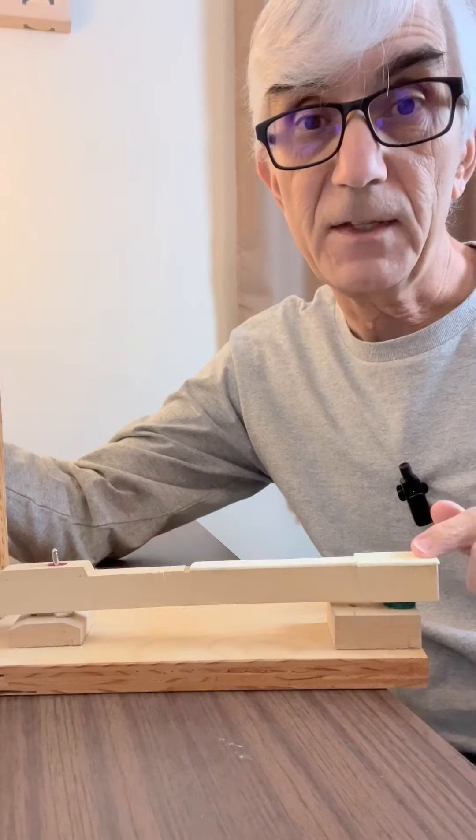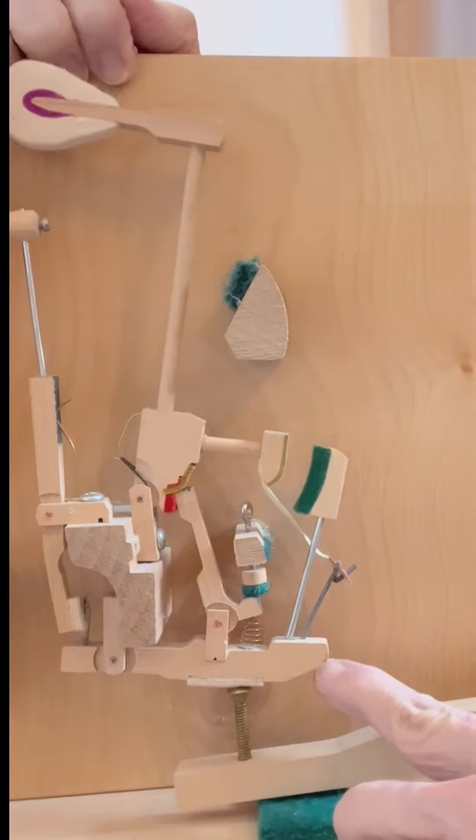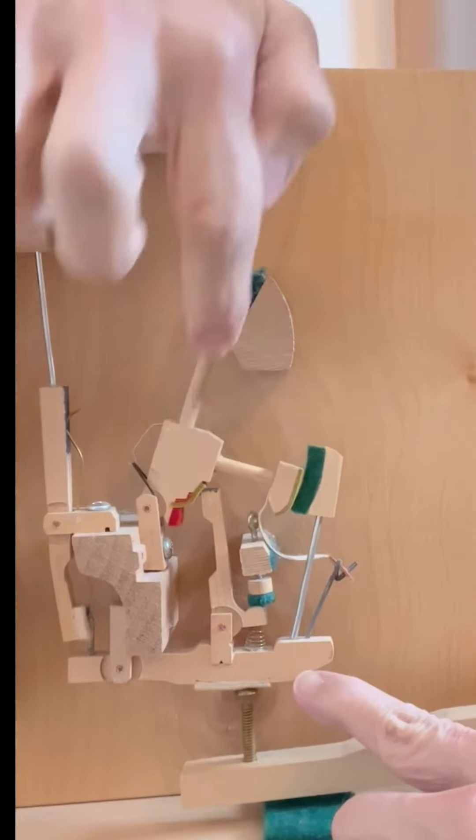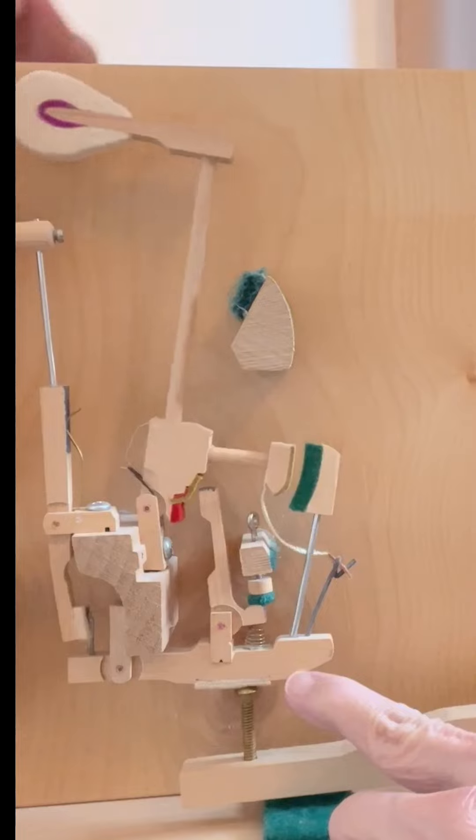When you press the front of the key down, the back of the key goes up. That raises the capstan, which pushes on the whippen, which lifts the hammer. Partway through, the jack kicks out, and the hammer can now travel freely on its own momentum and hit the string.